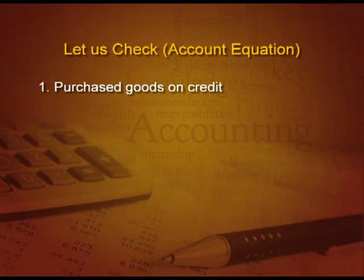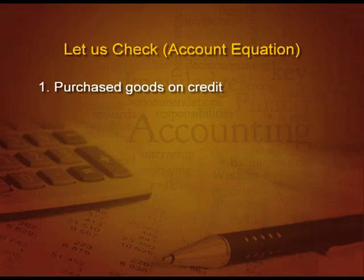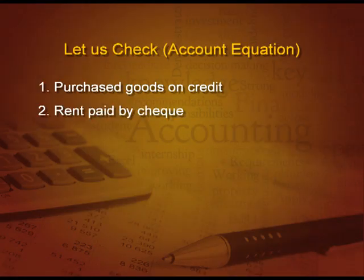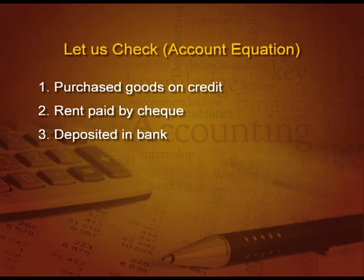Let us check what you have understood using the accounting equation with a few entries. First, purchase goods on credit: goods will increase and the liability (creditor) will also increase. Next, rent paid by check: bank decreases and rent is an expense which reduces capital. Next, deposited money in the bank: cash comes down and bank goes up — one asset decreasing, another increasing, so the equation still holds.